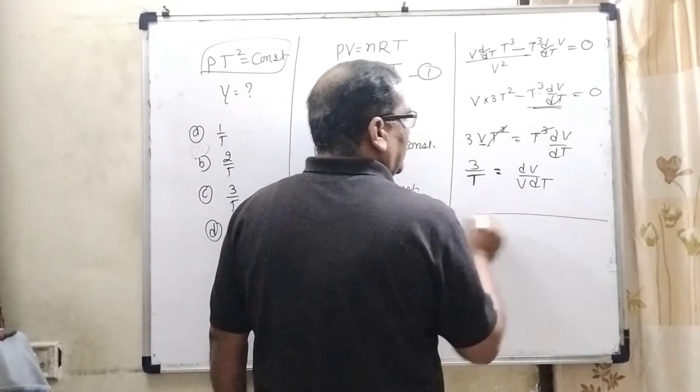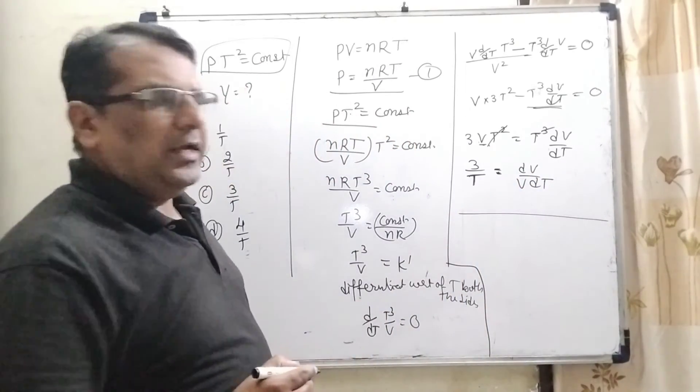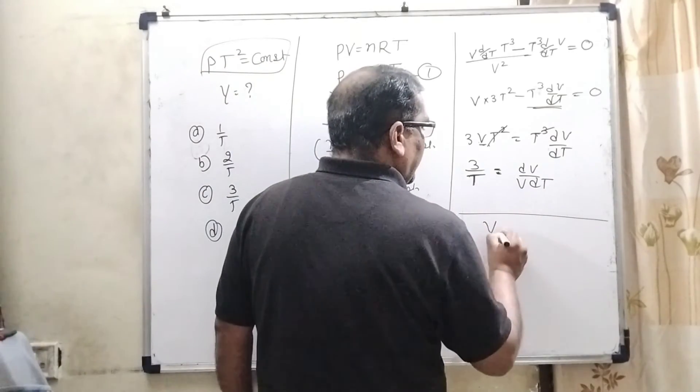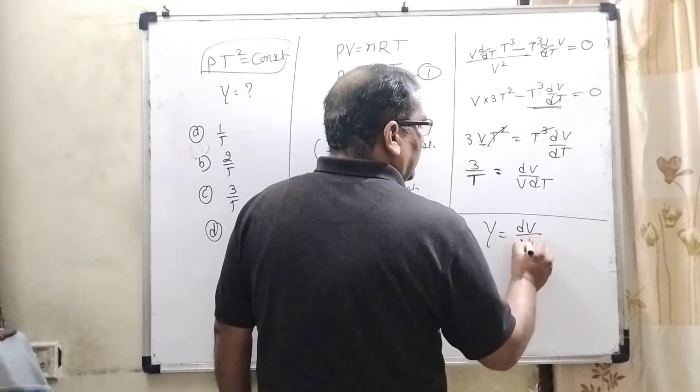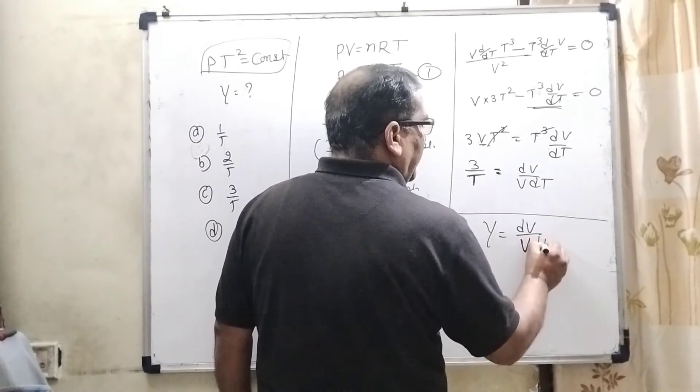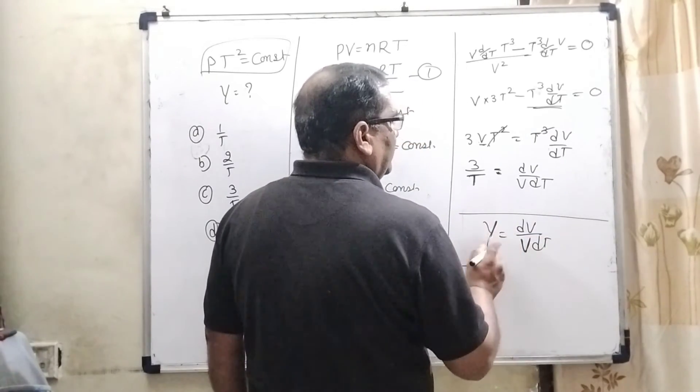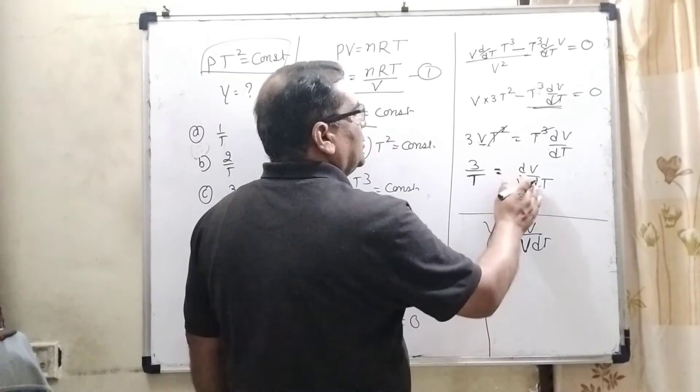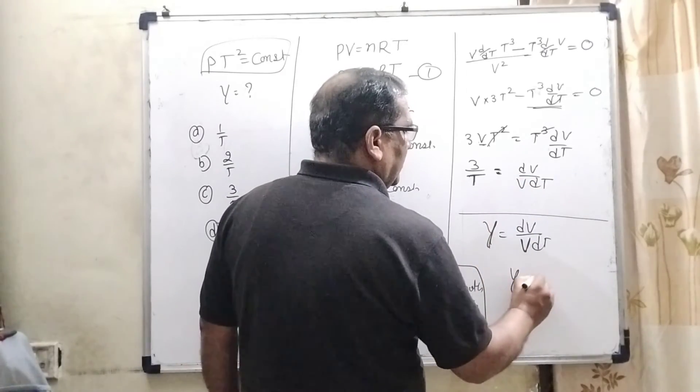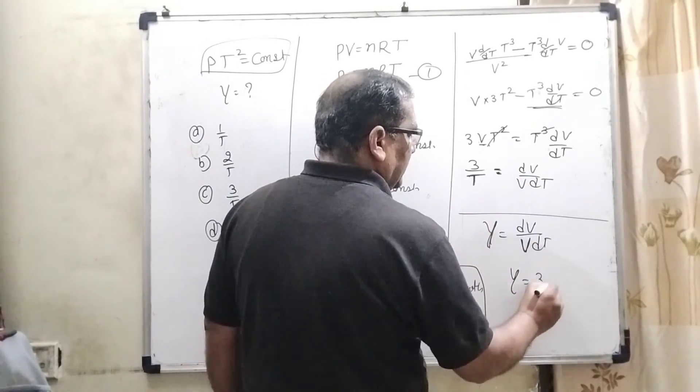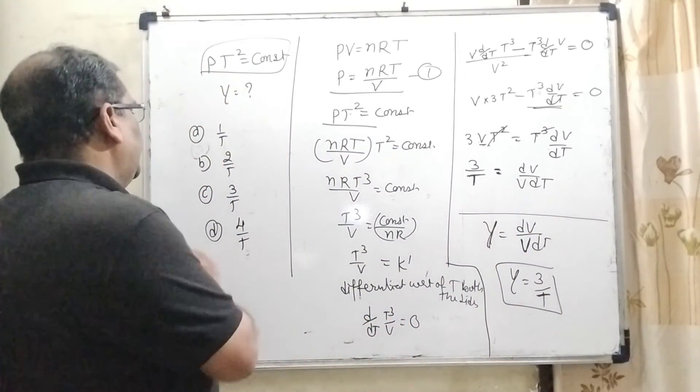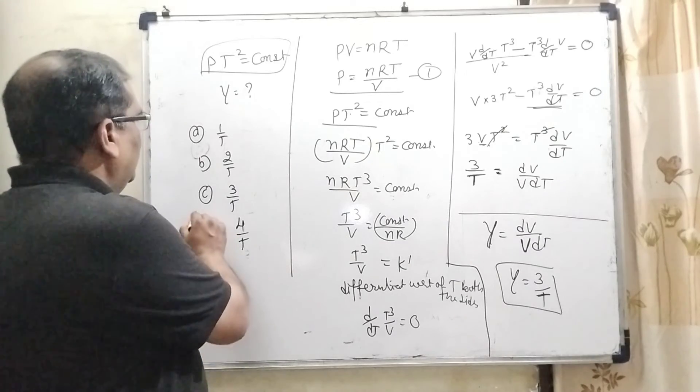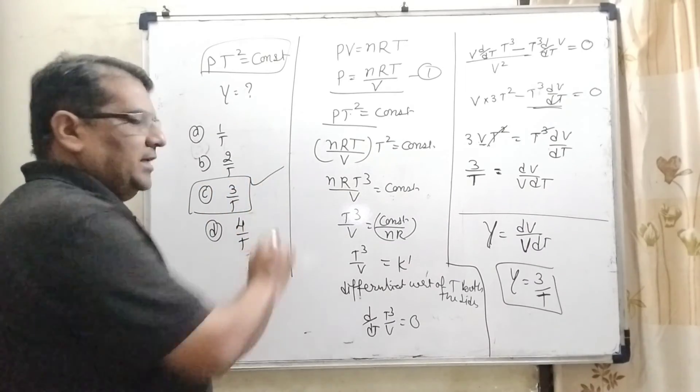As we know from volumetric expansion, it is computed by gamma = change in volume / original volume × temperature. So it can be written as gamma = 3/T, which is our answer. Let's see which option matches. Here 3/T, option C is correct.